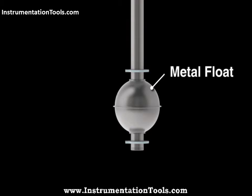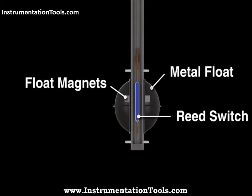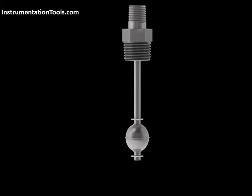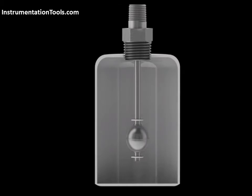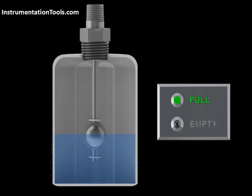All float-operated liquid level switches operate on the buoyancy principle. The buoyant force acting on an object is equal to the mass of liquid displaced by the object. As a result, the partially submerged float moves with the level of the liquid in the vessel.